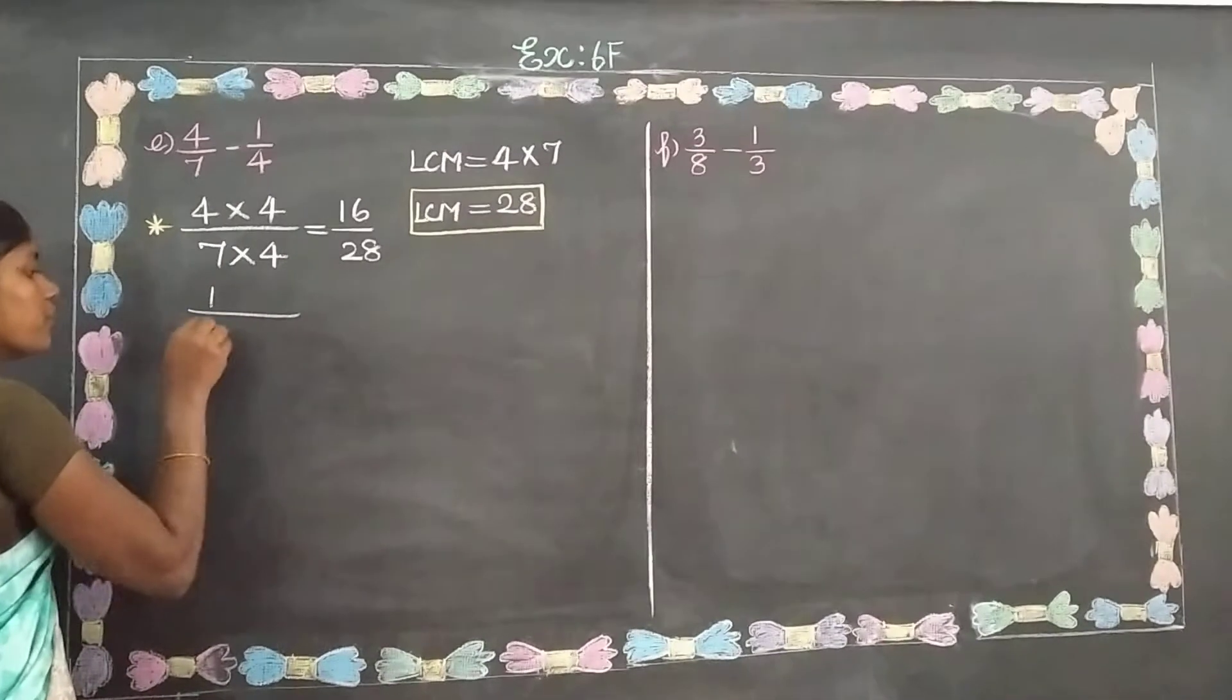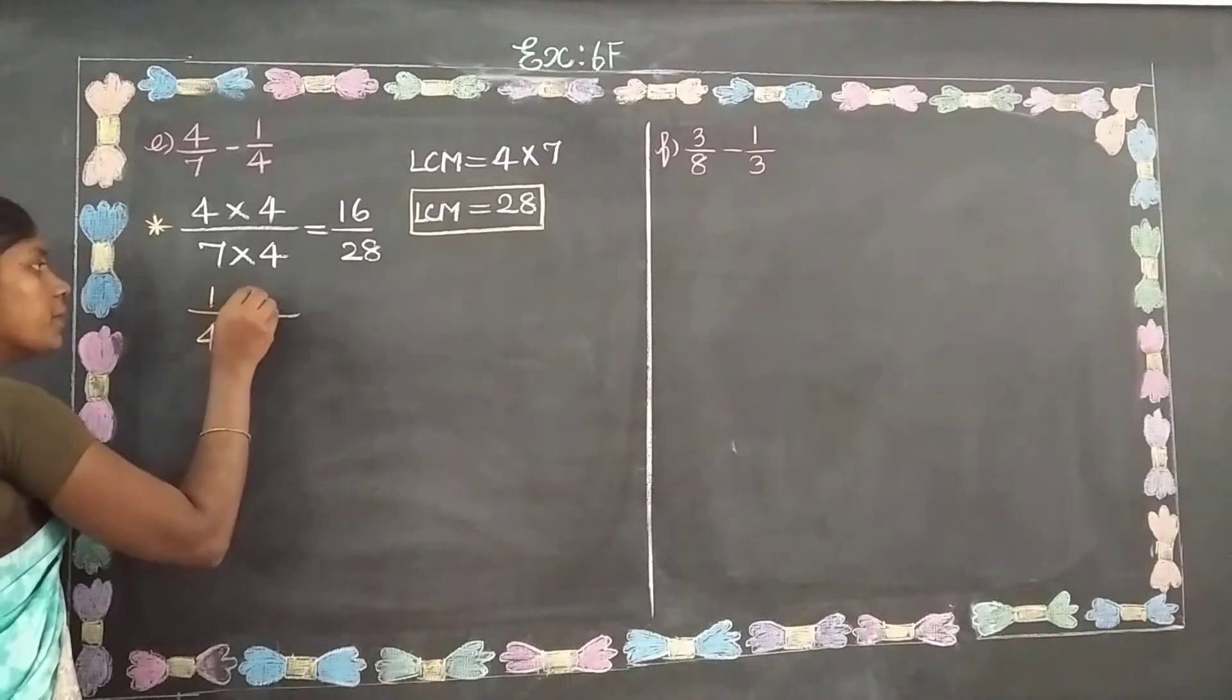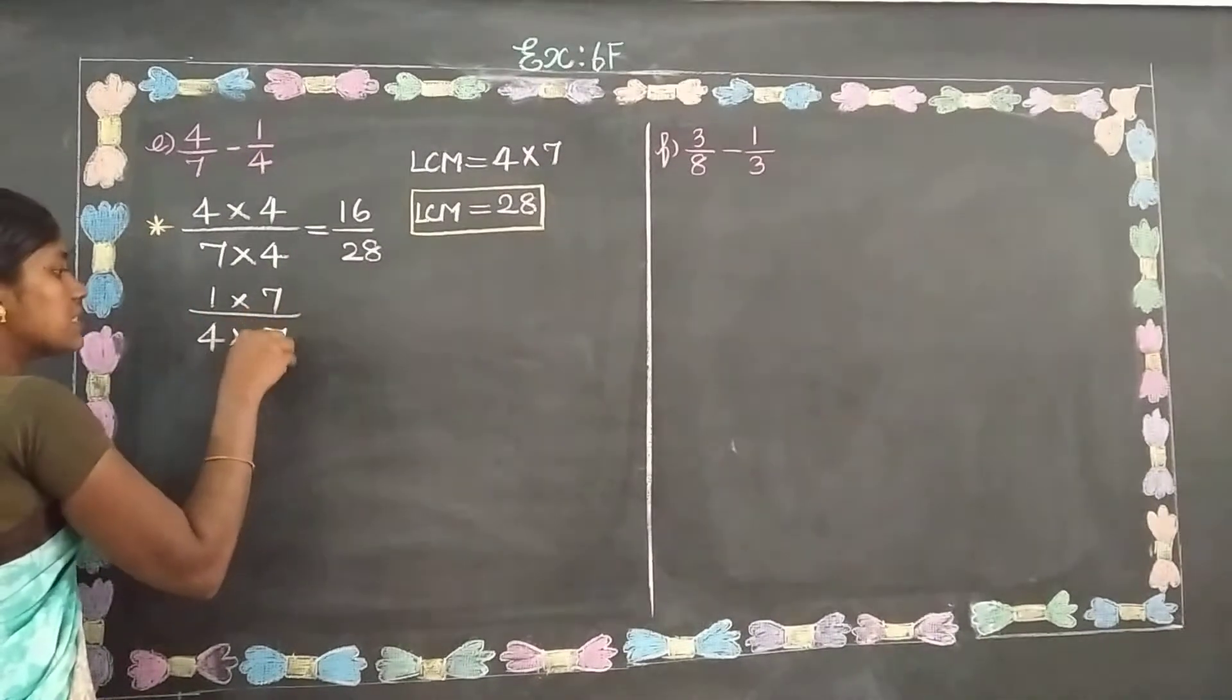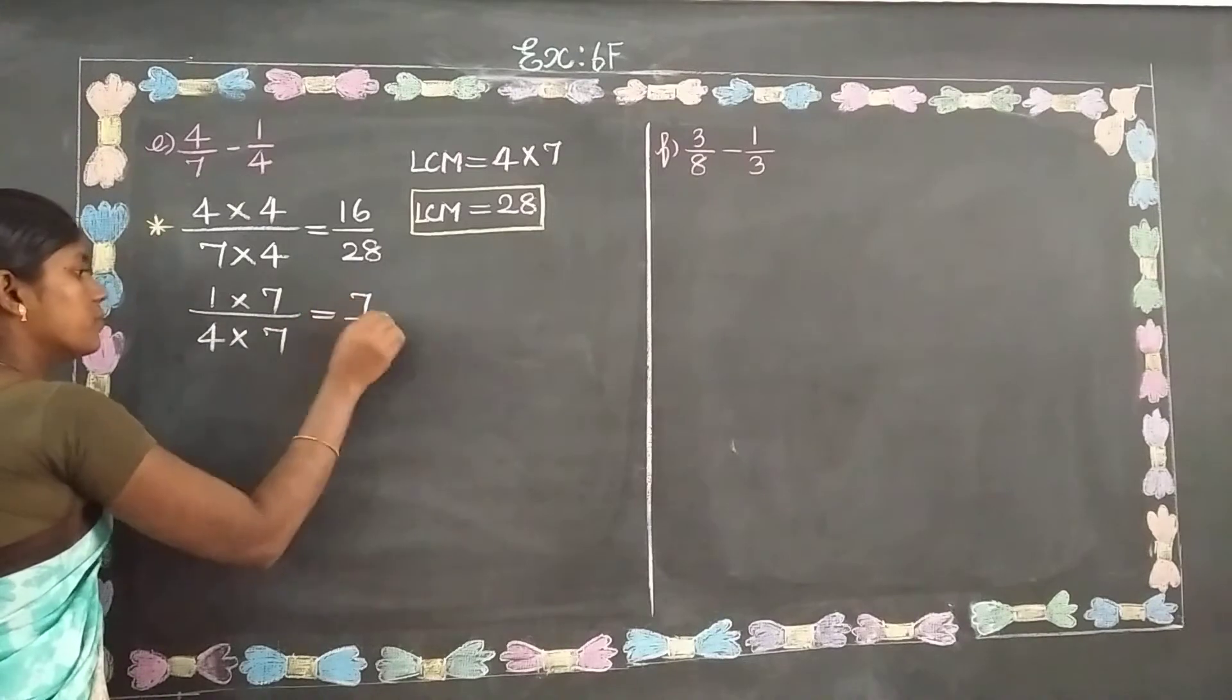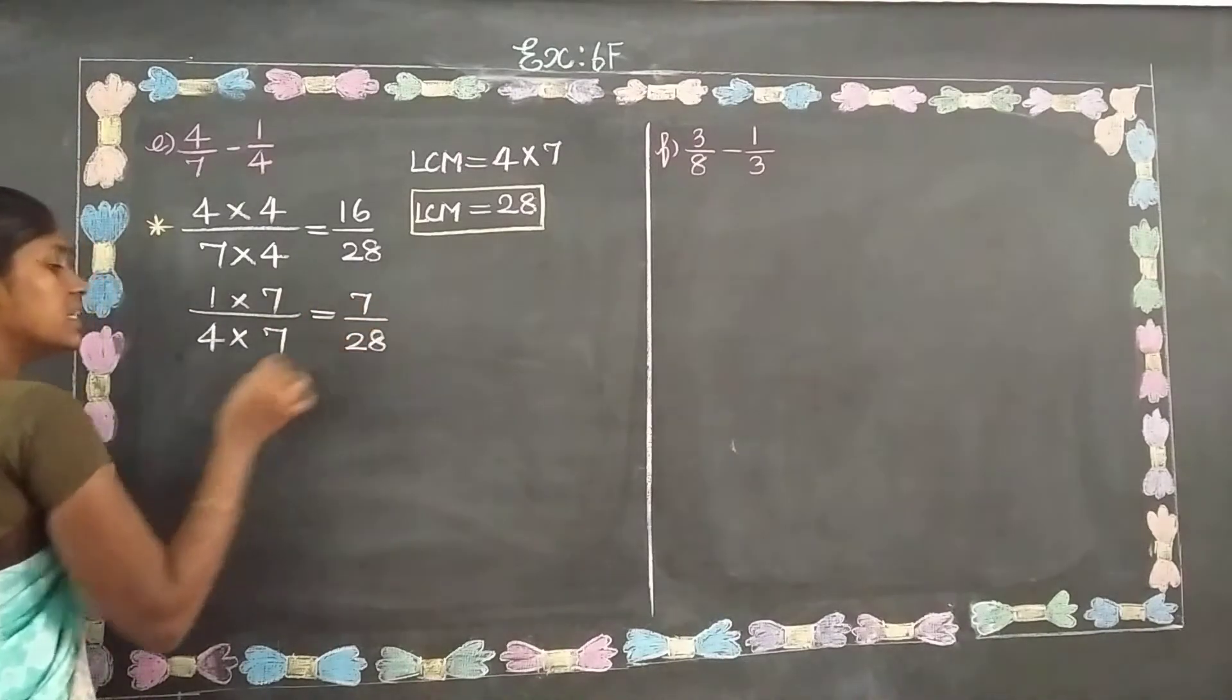And next sum, 1 by 4. 4 times what multiple? 7 times what multiple? 1 times 7 is 7. 4 sevens are 28.